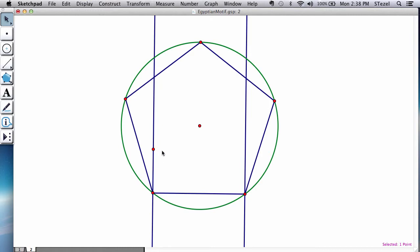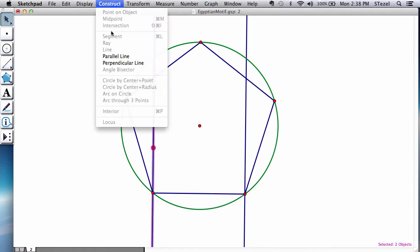That way, you could also have some variation in your design. So once I have this movable point here, I select the movable point and its perpendicular segment. Construct another perpendicular.